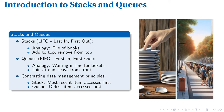Stacks and queues are fundamental data structures. Stacks operate on a last-in, first-out principle, similar to a pile of books where you add or remove from the top. This is crucial in programming for function calls and expression evaluation. Queues, on the other hand, follow a first-in, first-out approach, like people waiting in line for tickets. They're essential for scheduling tasks and managing data buffers.